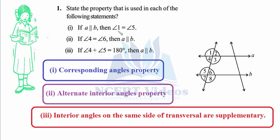The first statement says angle one equals angle five. When two parallel lines are intersected by a transversal at two distinct points, they form corresponding angles. To prove it, if you copy this whole configuration and place it over the other intersection, angle one equals angle five, four equals seven, two equals six, and three equals eight. This confirms corresponding angles are equal.